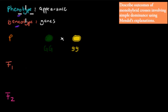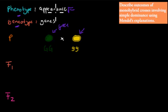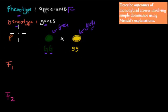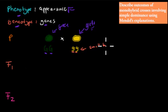Phenotype just means the appearance. For example, these plants are green, so the phenotype is green; this one's phenotype is yellow. The genotype is what actual genes are inside the plant. This plant has two capital Gs, which means it has the dominant green gene. Whereas this one has two small gs, meaning it's actually yellow. Genotype is the actual genes inside, whereas phenotype is just what it looks like.